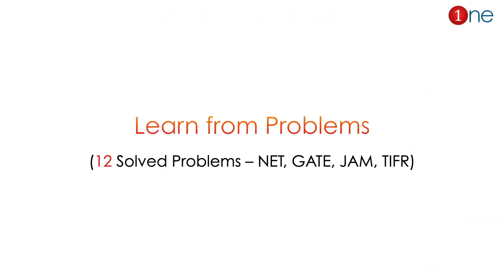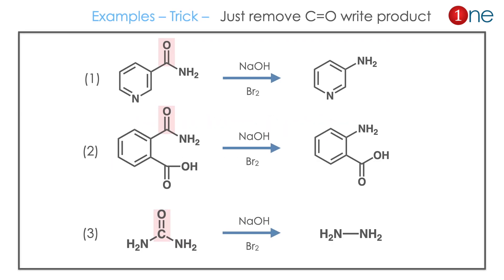We will now learn Hofmann rearrangement through problems. I have given 12 representative problems — your learning can be improved by solving them. For the examples, the trick is simple: just remove the CO from the reactant and you will have the final product.